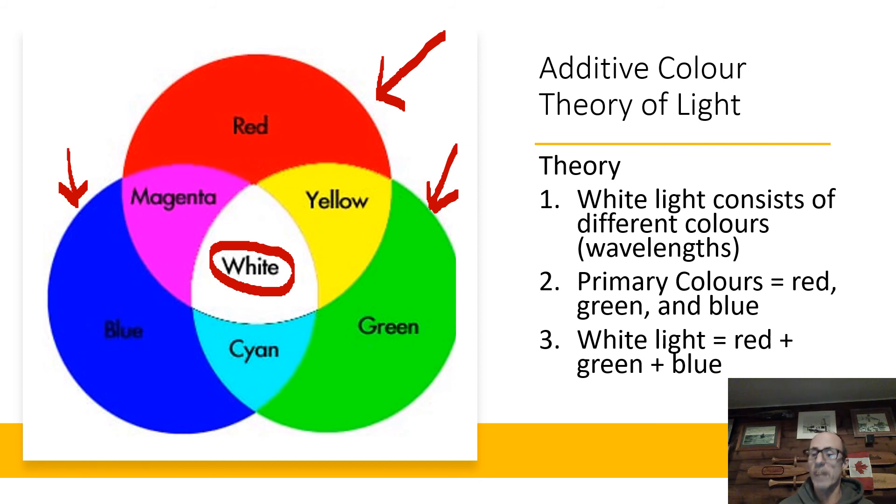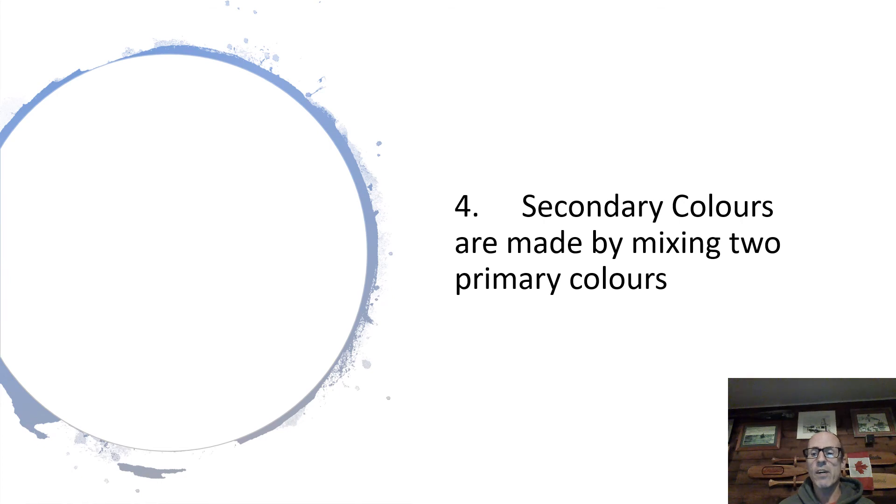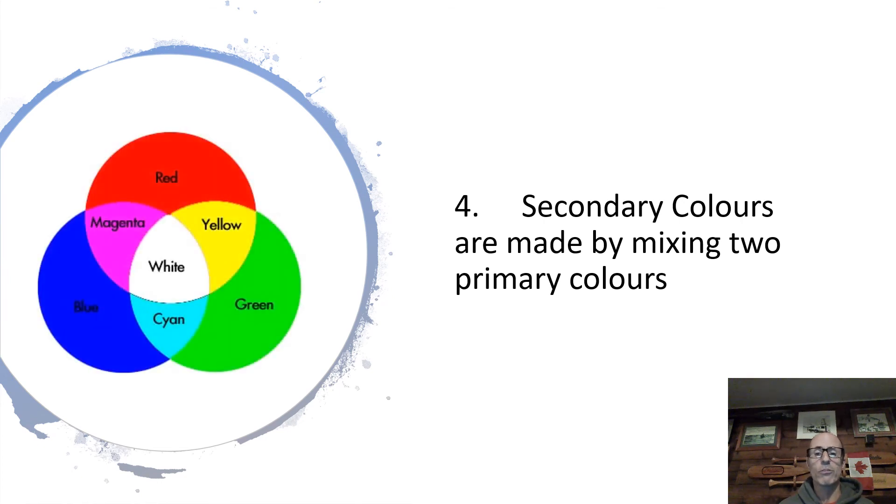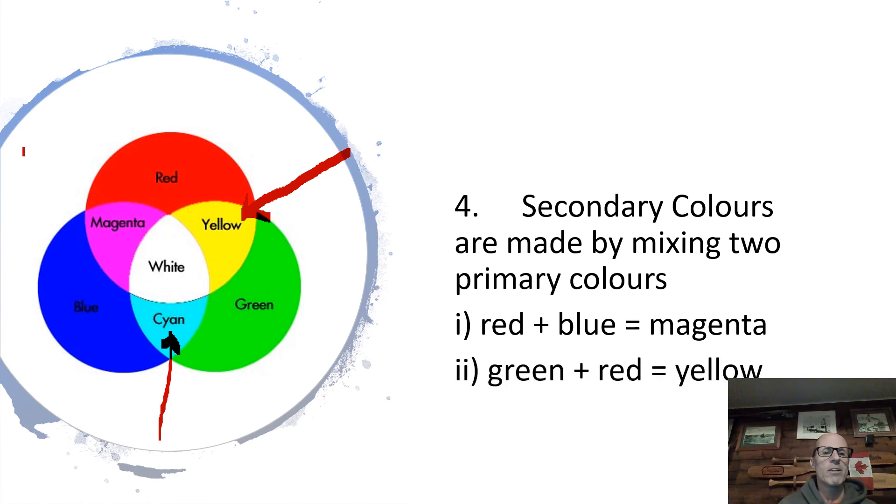Next, we're going to take a little look at the secondary colors that you get from mixing the primary ones. The secondary colors are made by mixing two primary colors. So interestingly, if you mix red and green together, you get yellow. And if you mix blue and green together, you get cyan, which you might call turquoise. And finally, when you take blue and red and mix them together, you get magenta. Those are our secondary colors that we can get from mixing the primary colors.